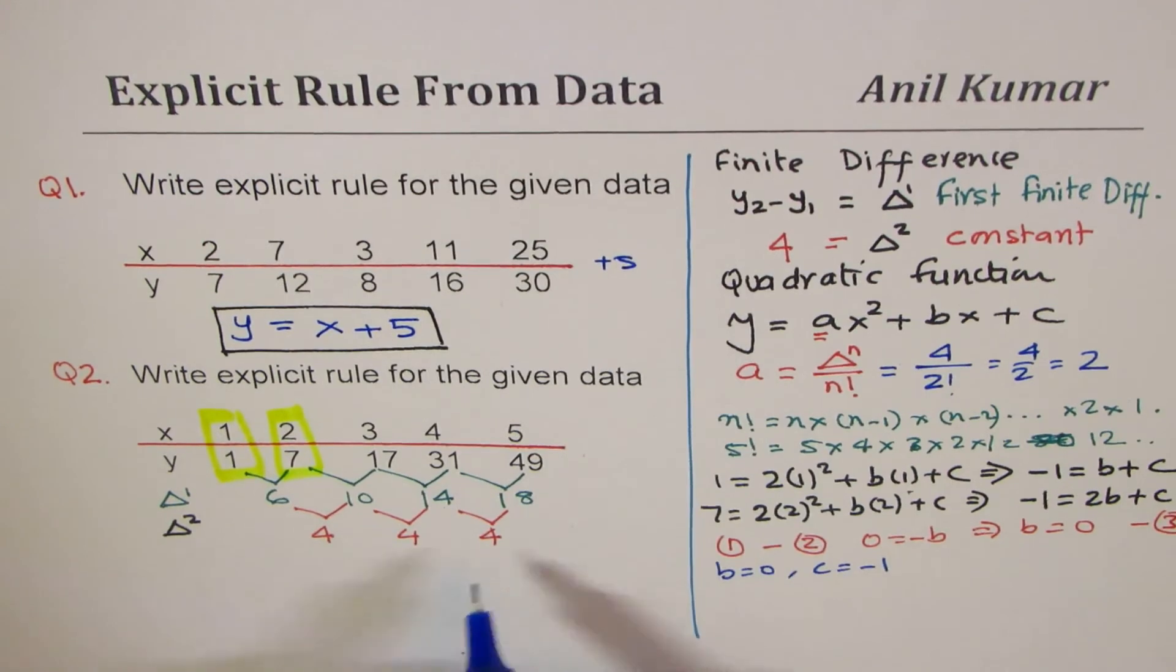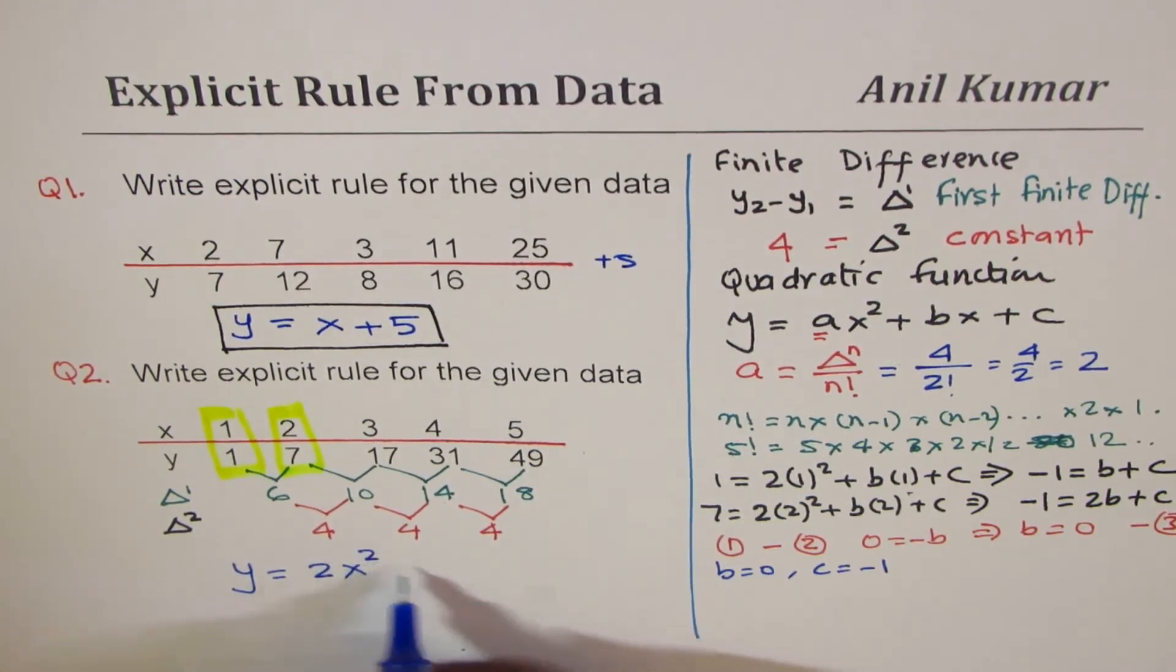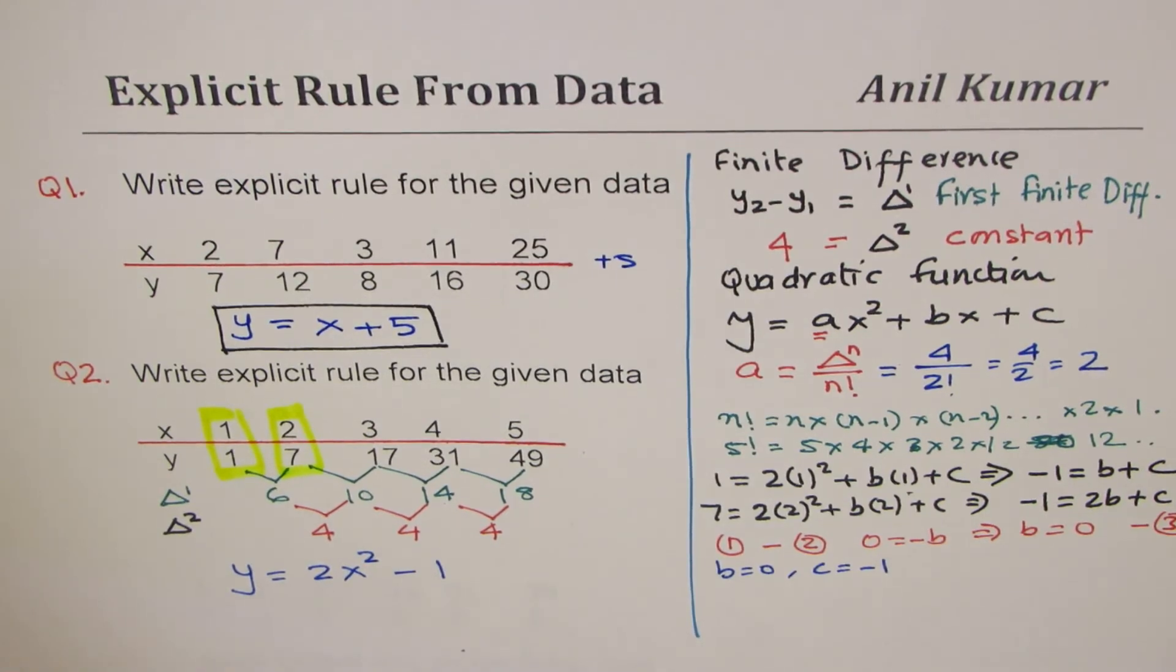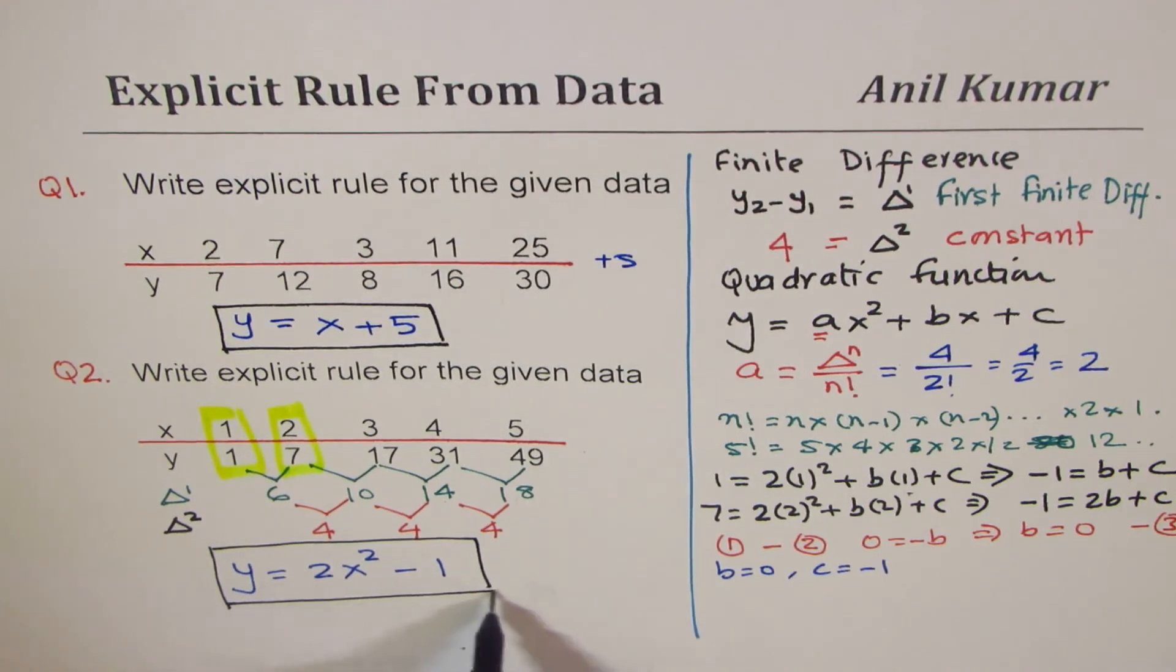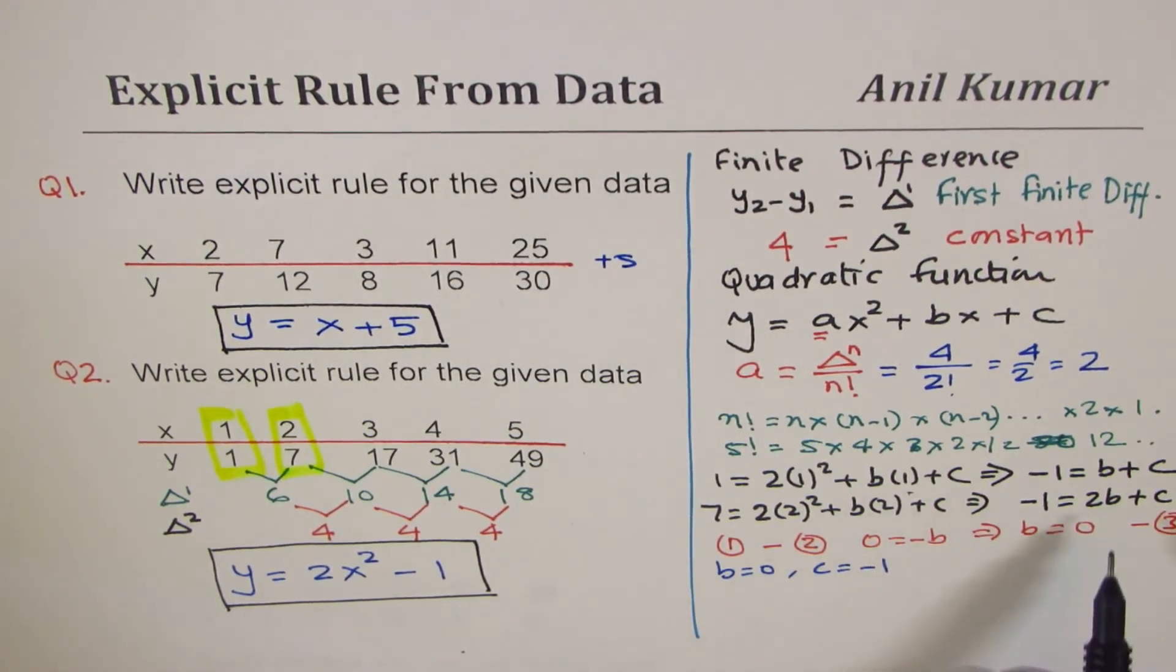Substituting all these values in our equation, we get y equals 2x square minus 1. So that is how we can actually find the equation relating to data. I've done few shortcuts here simply because I didn't want to run over space, but I hope there were simple steps left in between which you can fill in.